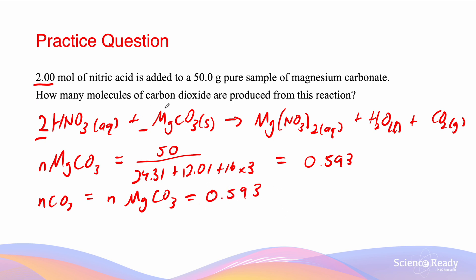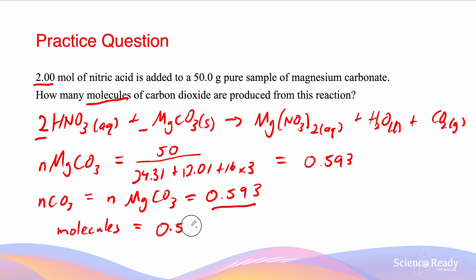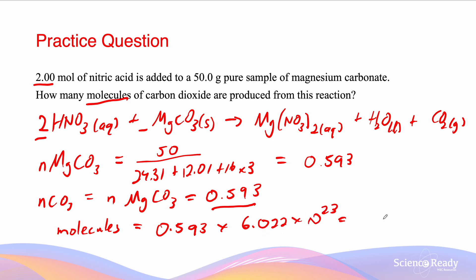The number of molecules is what is asked for in the question, so we need to multiply the number of moles by Avogadro's number. Molecules equals 0.593 times 6.022 times 10²³, and that gives us 3.57 times 10²³ molecules. We give our answer to three significant figures.